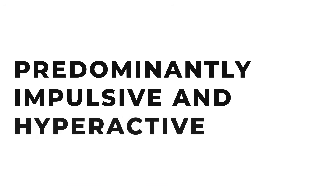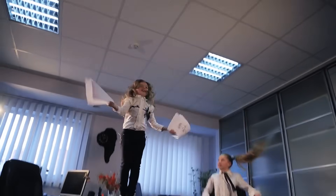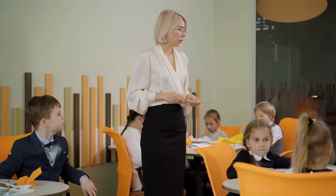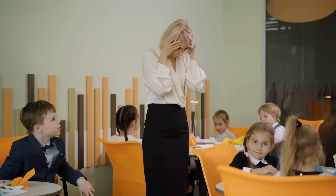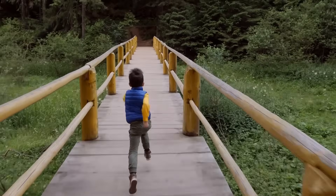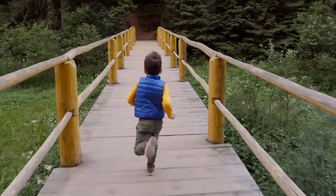The second type is predominantly impulsive and hyperactive. These kids are way easier to catch and find because they're very disruptive. They're going all around the room and teachers are having a hard time managing their behavior. They're running out into the road and you have to chase after them and keep track of them. That's the ADHD predominantly impulsive hyperactive type.